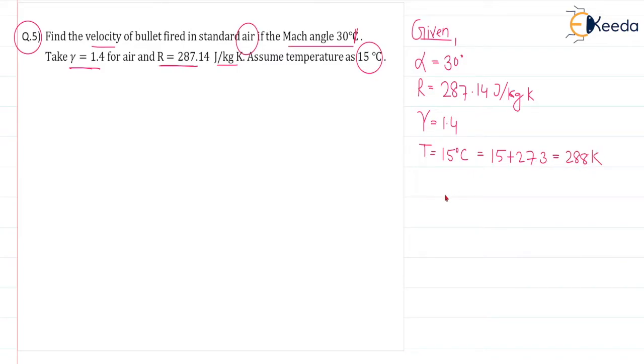The question is find the velocity of the bullet fired in meter per second. We have to find the velocity. So we know this equation sine alpha equal to C by V. We can put this value, sine 30 equal to C. C we have to calculate and then we can find the value of V.